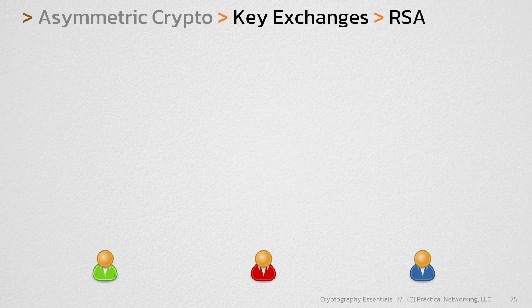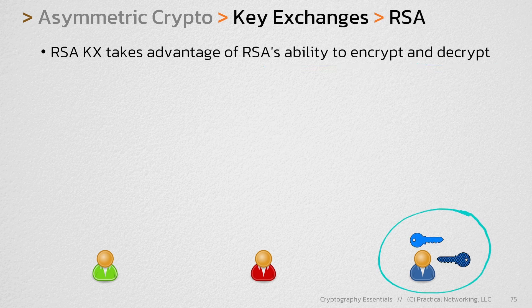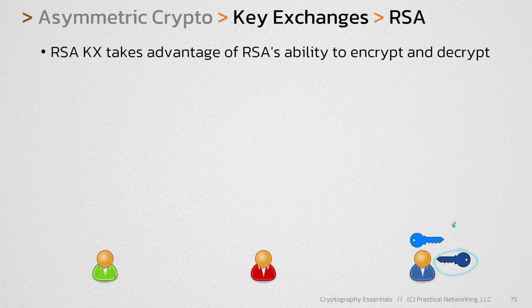Doing a key exchange with RSA simply takes advantage of RSA's ability to encrypt and decrypt. For this to work, we need one of these users to have an RSA asymmetric key pair. In this case, this is the blue user's public key and this is the blue user's matching private key. We can use these keys to establish a shared secret.